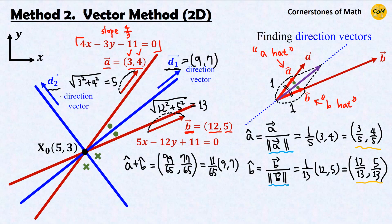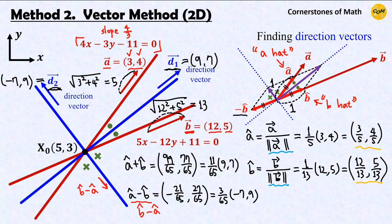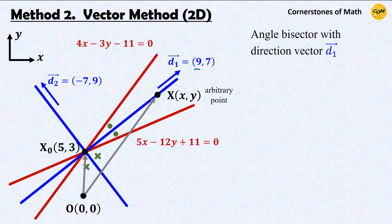What about vector D2, the direction vector for the other angle bisector? This is rather simple. You draw vector minus B-hat, the unit vector having the opposite direction to B-hat. Adding A-hat and minus B-hat gives a vector in the direction of D2. The actual calculation gives (−21/65, 27/65), which can be written as (3/65) times (−7, 9). So we choose D2 = (−7, 9). Note that you can also use B-hat minus A-hat, which points in the same direction.